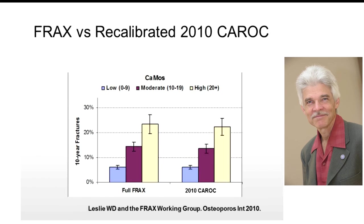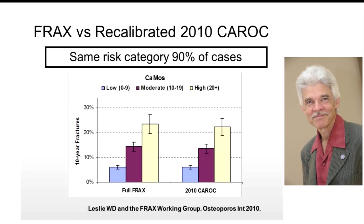Validation work published around the FRAX versus CAROC system shows that for low, moderate, or high risk categories, the observed 10-year fracture risk on the Y-axis is indeed less than 10%, 10 to 20%, or greater than 20% with both the FRAX and the CAROC system — demonstrating good stratification and calibration. The two systems were designed to give the same risk category in the great majority of individuals — 90% of individuals actually have the same risk categorization under both CAROC and FRAX.